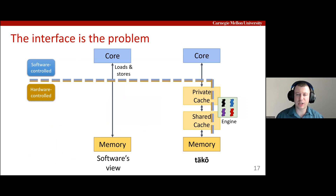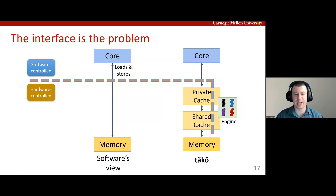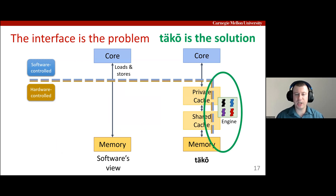Popping up a level, TACO provides these benefits by triggering compute in response to data movement. As we saw in the decompression example, simply offloading compute into the memory hierarchy like in prior near-data computing designs does not provide the same functionality. TACO provides this missing mechanism. By opening up the cache hierarchy to software, TACO enables a wide range of optimizations using a single general-purpose architecture.